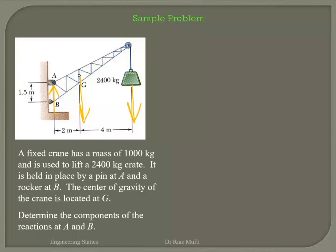Now let's look at the forces in the horizontal direction — I can assume it pointing this way or that way. I can pick any one, because it's not obvious which direction it would be, so you can pick either. When we look at point B, it's a rocker. A rocker means it can move in this direction, so there won't be any reactive force in the vertical. It can rotate, so there won't be any reactive moment. I cannot move it in this direction, so I will have a reactive force in this direction.